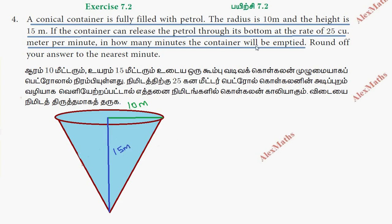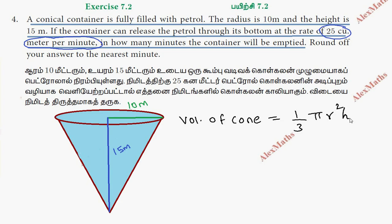Now we are going to empty the vessel at a rate of 25 cubic meters per minute. So we are going to find the volume of the cone — that is the volume of petrol — equal to 1 by 3 pi r squared h. That is 1 by 3 into 22 by 7 into r squared, so 10 into 10, height 15.